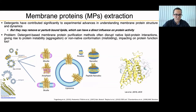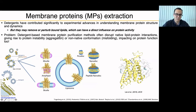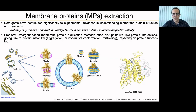How can we extract membrane proteins? Usually people use detergents, and even though they have contributed significantly to experimental advances in understanding membrane protein function, they remove tightly bound lipids that are next to the membrane protein of interest and therefore have a direct influence on protein activity. The problem with detergent-based membrane protein purification is that detergents disrupt the lipid bilayer and break lipid-protein interactions, giving rise to protein instability, aggregation, non-native conformations such as misfolding.